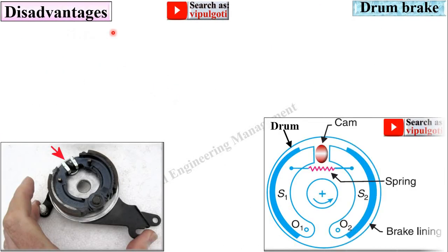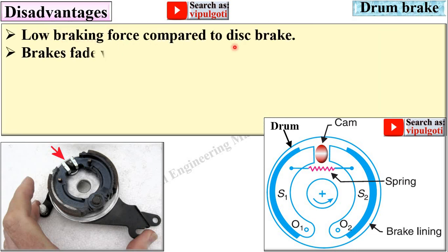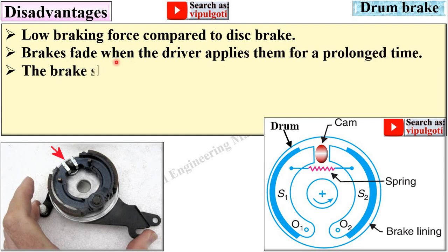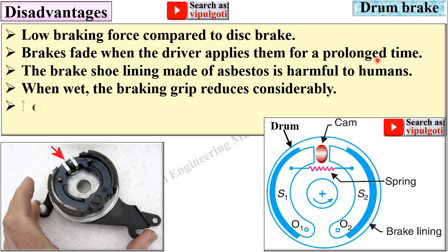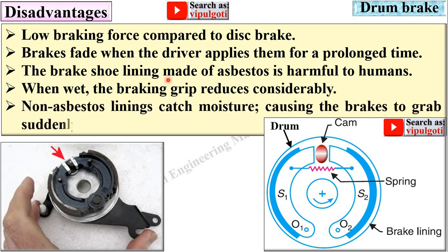Now disadvantages of the drum brake. Low braking force compared to disc brake. The brakes fade when the driver applies them for a prolonged time. The brake shoe lining made of asbestos is harmful to humans. When wet, the braking grip reduces considerably. Non-asbestos linings can catch moisture, causing the brake to grab suddenly.